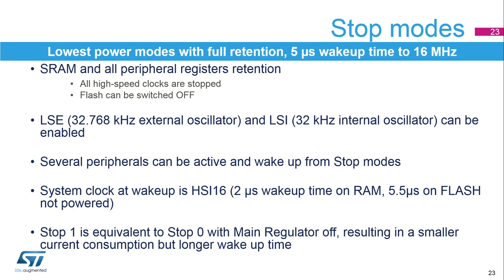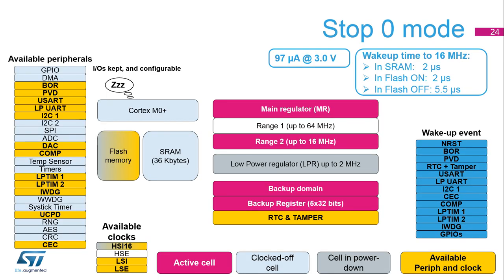The divider configuration to system clock is kept upon wake-up. Stop 1 is similar to stop 0, with the main regulator switched off. The voltage regulator is configured in main regulator mode in stop 0. All clocks in the V-Core domain are stopped. The PLL, HSI-16, and HSE oscillators are disabled. The RTC, clocked by the internal or external low-speed oscillator, can remain active. The brown-out reset is always enabled. Most peripheral clocks are gated off, but several peripherals can be functional in stop 0 mode.